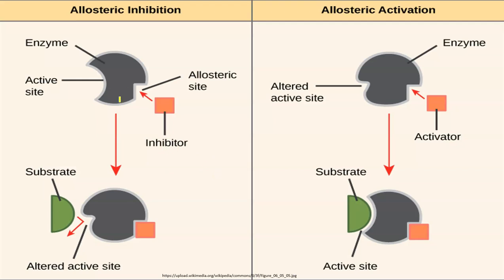In this diagram we can clearly see allosteric inhibition as well as allosteric activation. For allosteric inhibition: the enzyme has an active site, and as it is an allosteric enzyme there is one more site called the allosteric site. If an inhibitor molecule binds to the allosteric site, what happens?